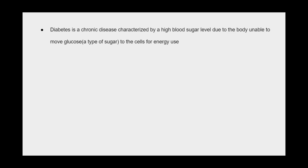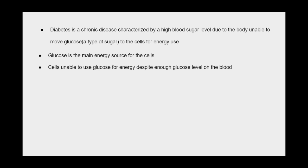Diabetes is a chronic disease characterized by a high blood sugar level due to the body's inability to move glucose — a type of sugar — into the cells for energy use. Glucose is the main energy source for the cells, yet cells are unable to use glucose for energy despite there being enough glucose in the blood.